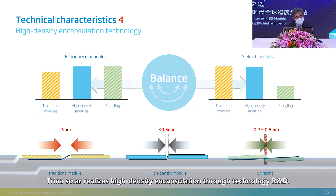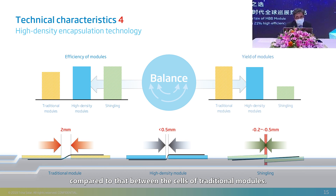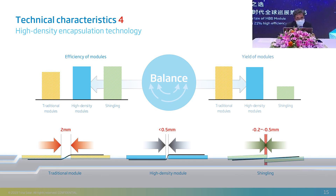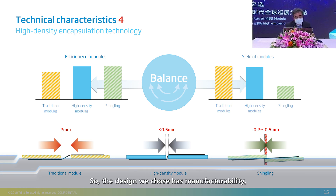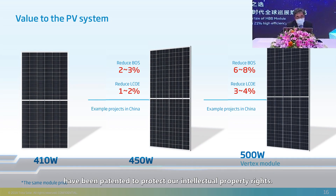Trina Solar realizes high-density encapsulation through technology R&D. We reduced the distance between encapsulated cells from 2 mm to less than 0.5 mm, compared to traditional modules. This has an advantage over shingling. There is a risk of micro-cracks in the shingling design, but our approach improves module efficiency while ensuring the same yield as shingling. As the figure on the left shows, we are equal to the shingling design in efficiency and yield, so our chosen design has manufacturability, high yield, and high power. The Vertex 500-watt module is patented to protect intellectual property rights.